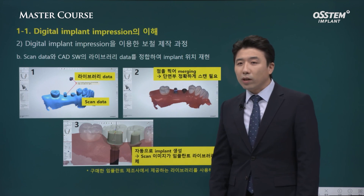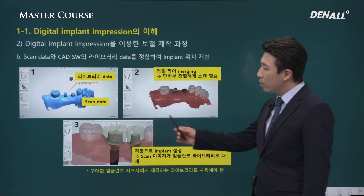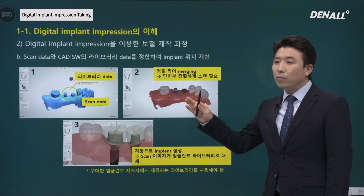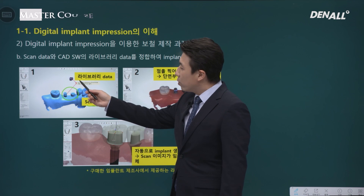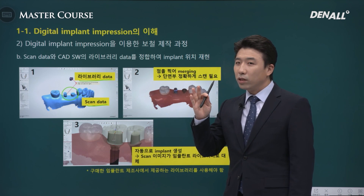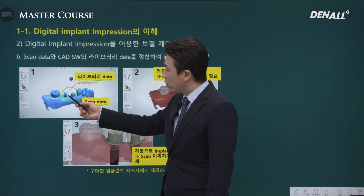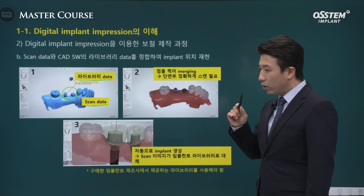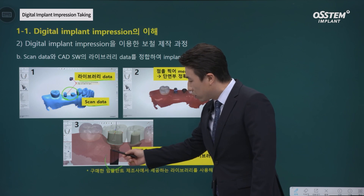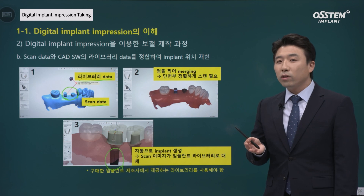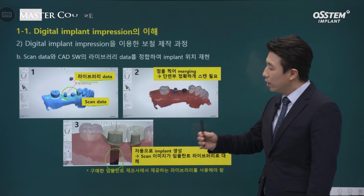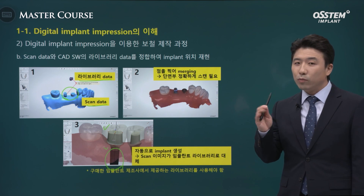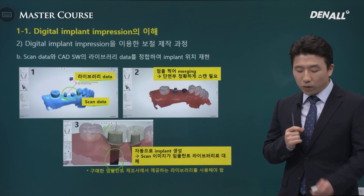Next, libraries are called into the CAD software along with the scan data. The CAD software records the position of the scanned scan bodies, but by itself doesn't have information about the implants. If you bring in the library data, we can estimate implant positions. The data is merged with the scanned body data by pointing various landmarks. They are matched, and implant positions are reproduced in the CAD software. From that point, prosthetic design can begin — the abutment is designed, and also the crown. Bringing in the library is very important for precise prosthesis fabrication.